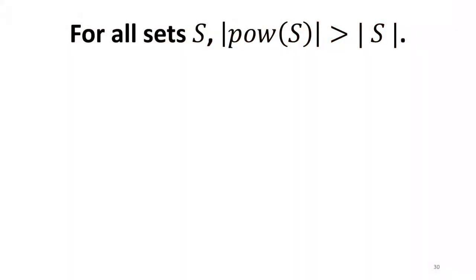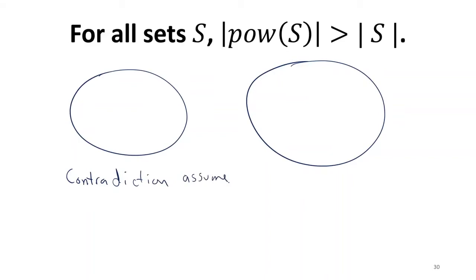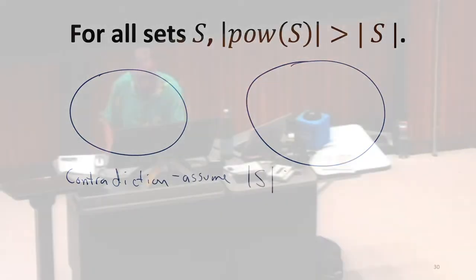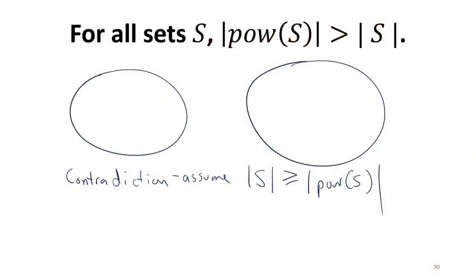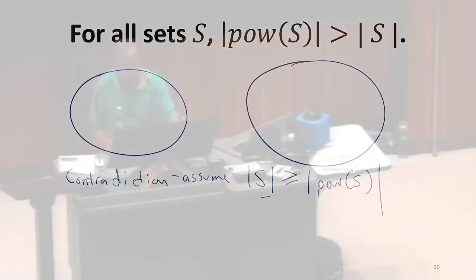We're talking about set cardinalities, so that should get us thinking about the definition. We've got a surjective total function, and we're going to prove this by contradiction. So to get a contradiction, we're going to assume that it's not the case that the power set is bigger. That would mean that the set S has cardinality greater than or equal to that of the power set. If that's the case, that means between S and the power set of S, we have a surjective mapping.